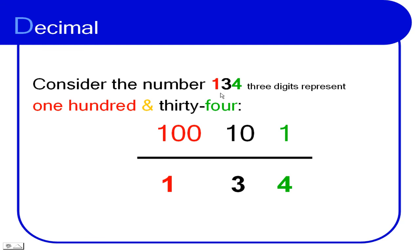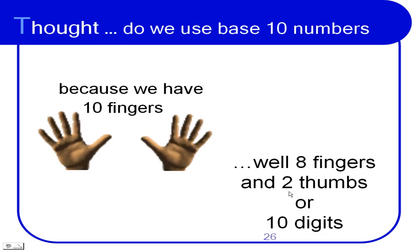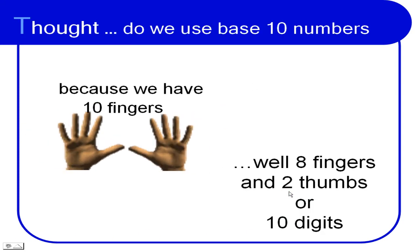If we look at this number, one three four, it's made up of one hundred, one ten, and one four. No, one hundred, three ten's and one four. No, one hundred, three ten's, and four one's.